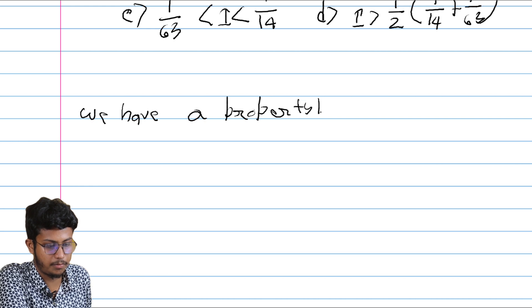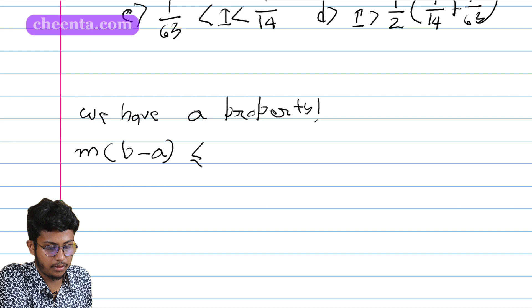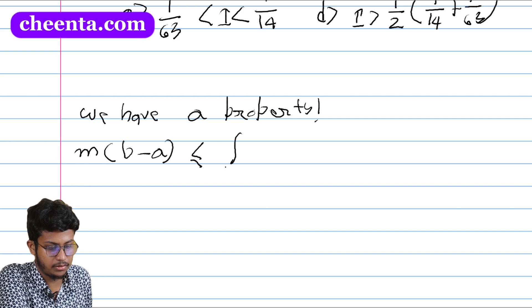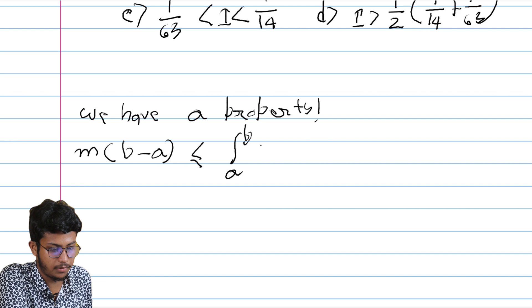We have a property. What is it? Small m into b minus a is less than equal to integration a to b, integration a to b f(x) dx.